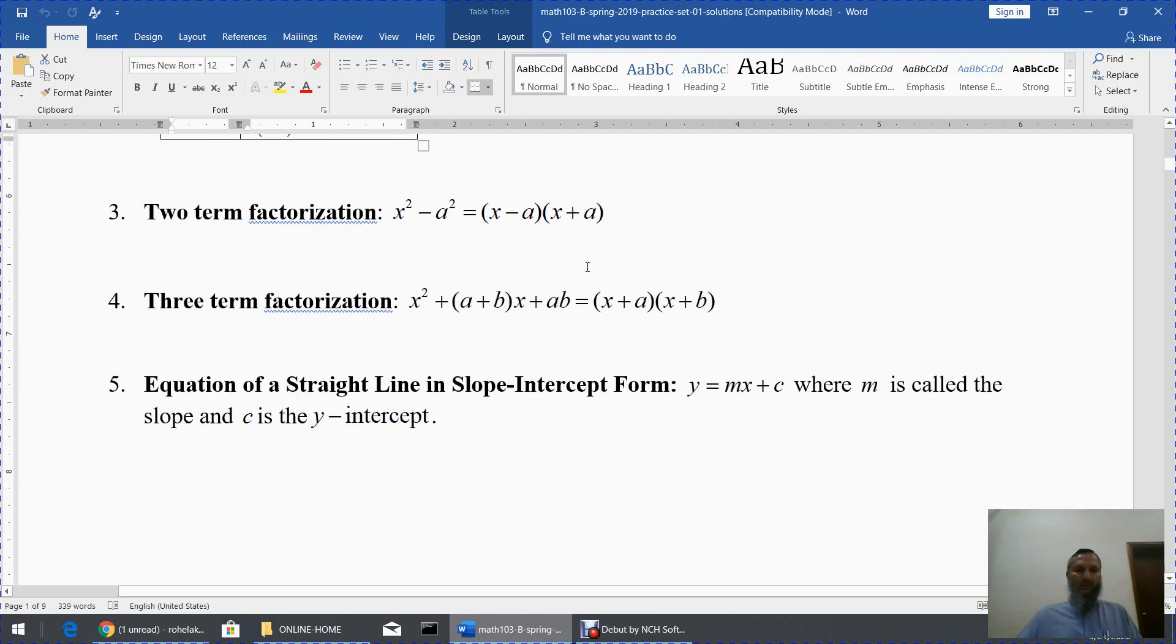Then what we learned was the two-term factorization: x² - a² = (x - a)(x + a). Now the power 2 has a name, it is x square minus a square equals x minus a into x plus a.